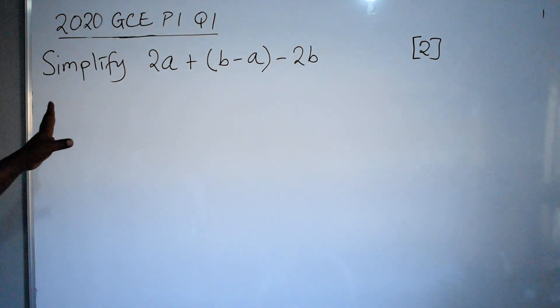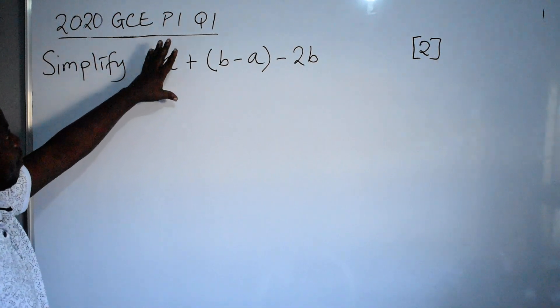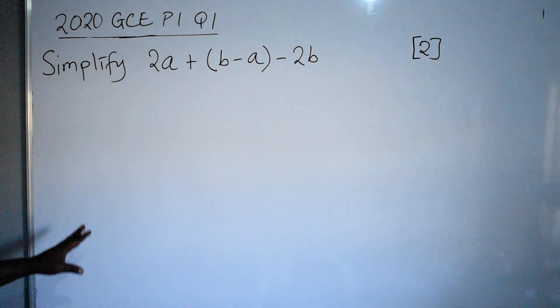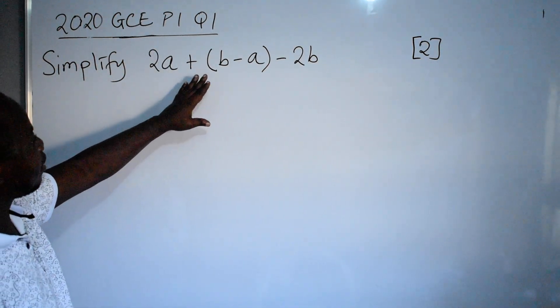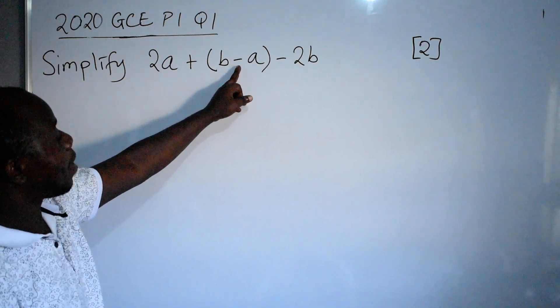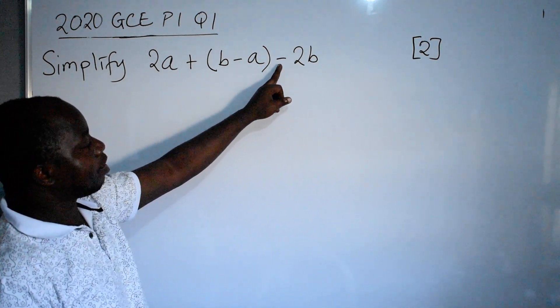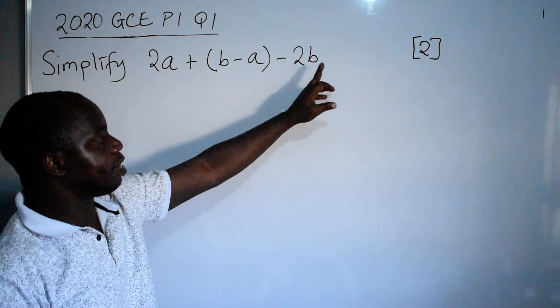Hello friends, let's look at the 2020 GCE paper 1 question 1. Simplify 2a plus in brackets b minus a, outside the brackets minus 2b, 2 marks.